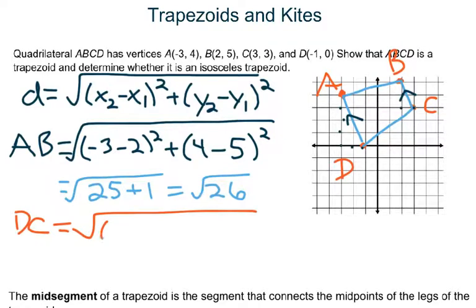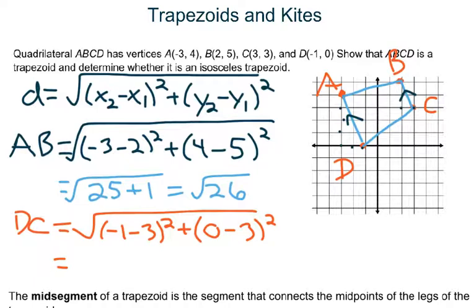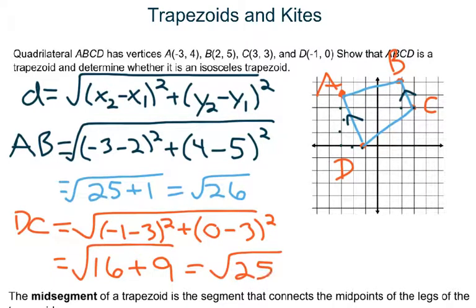For DC: √((−1 − 3)² + (0 − 3)²) = √(16 + 9) = √25. Although the values are close, √26 ≠ √25, so the legs are not equal. Therefore this is not an isosceles trapezoid. Yes, it is a trapezoid, but no, it is not isosceles — the two legs must be the same distance.